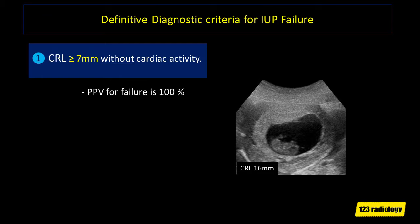This is the first definitive criteria for pregnancy failure: a crown rump length of 7 mm or more without cardiac pulsations, with a 100% positive predictive value. As you can see on this image, there is an embryo measuring about 16 mm in crown rump length; however, there is no visible cardiac pulsations, denoting definitive pregnancy failure.